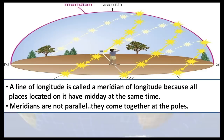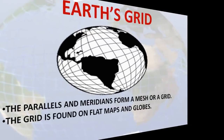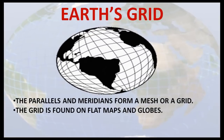Meridians are not parallel. They come together at the poles. The parallels and meridians form a mesh or a grid, which is found in flat maps and globes.